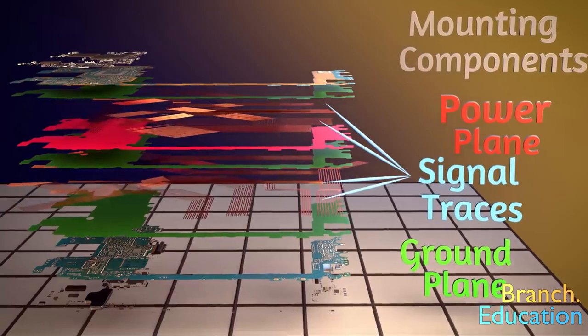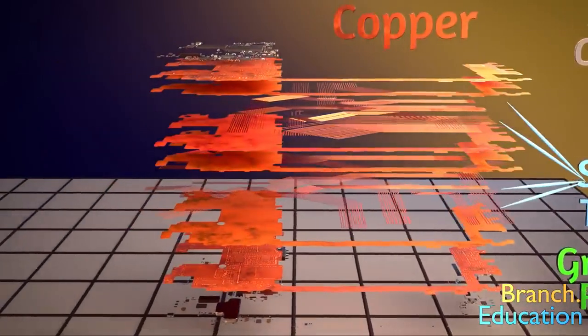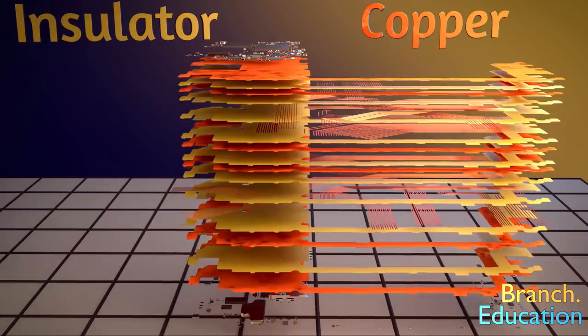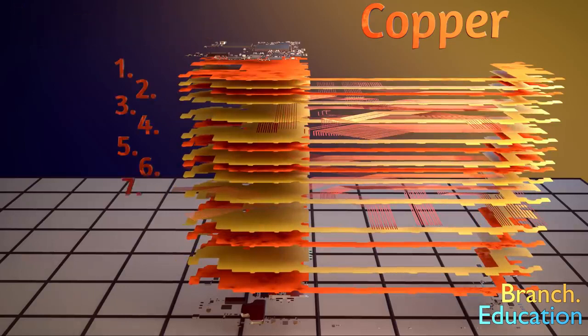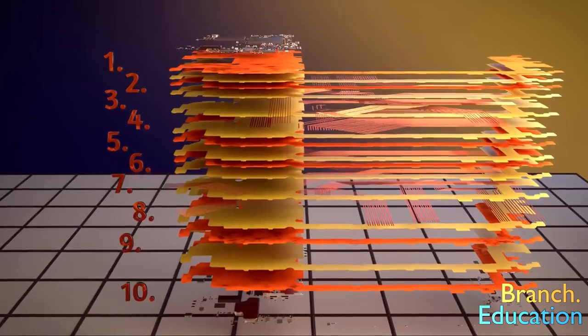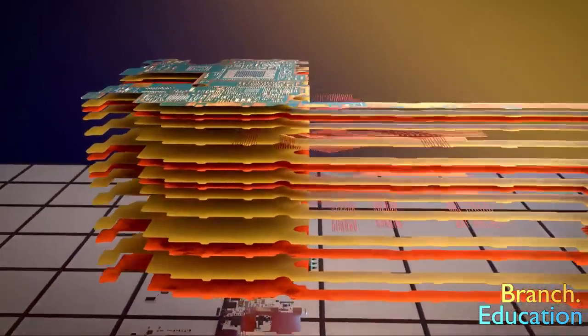Each of the conductive layers is composed of copper, and between each of the layers is an insulating fiberglass and epoxy resin that prevents the flow of electricity. This PCB has 10 conductive layers. However, in other applications they can have anywhere from 2 to 50 or more layers, but most PCBs stay around 2 to 10.